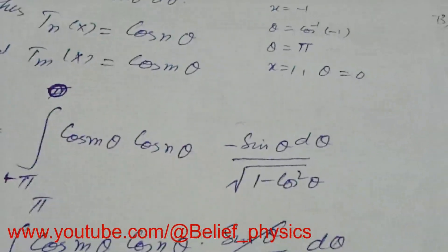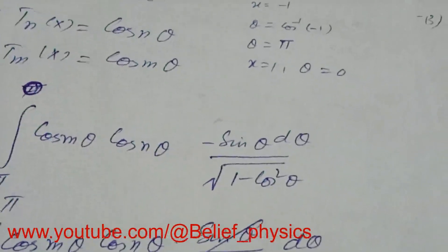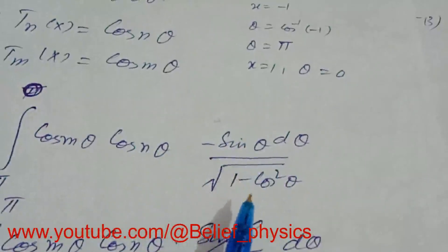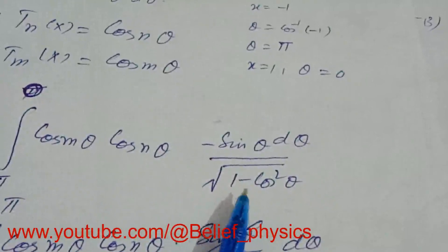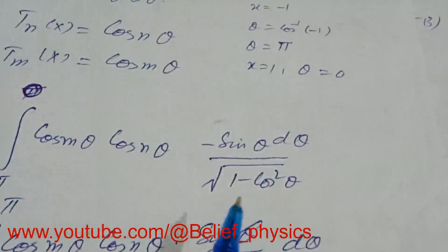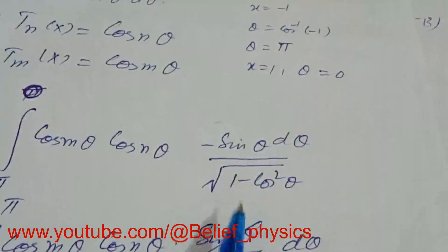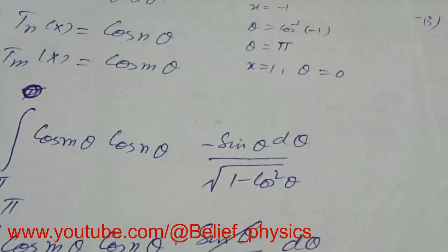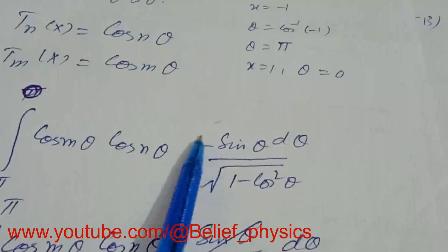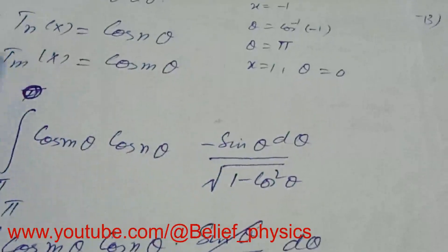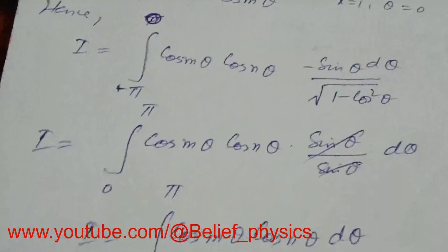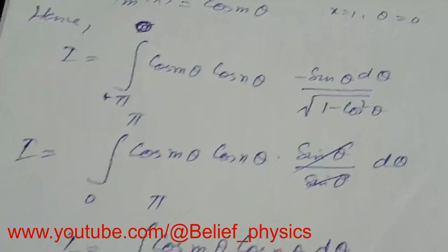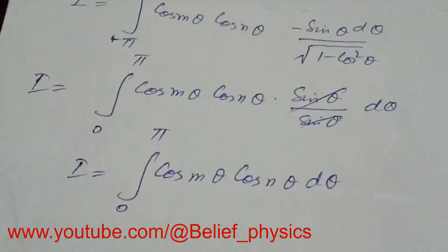Our integral becomes the integral from pi to zero of cos(m theta) times cos(n theta) d theta, divided by the square root of one minus cos squared theta. Now one minus cos squared theta is sin squared theta, so the square root gives sine theta, which cancels with the sine theta from dx. The negative sign reverses the limits, giving us the integral from zero to pi of cos(m theta) cos(n theta) d theta.